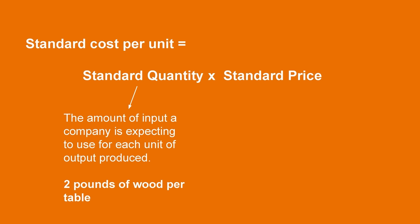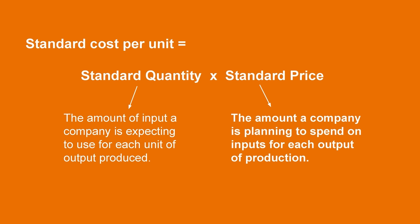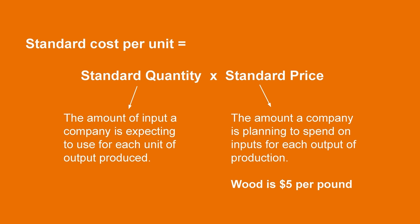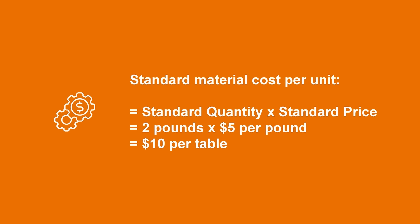Standard quantity is the amount of input that the company is expecting to use for each unit of output that they produce. In this example, they produce wooden tables and are expecting to use two pounds of wood for each table — that would be their standard quantity. Standard price is the amount the company is planning to spend on the inputs for each output of production. For example, let's say the company is planning to spend $5 on materials for each pound of production — this would be the standard price. We can now calculate the standard material cost per unit by taking the standard quantity of two pounds per table and multiplying it by the standard price of $5 per pound, giving us a result of $10 per table.